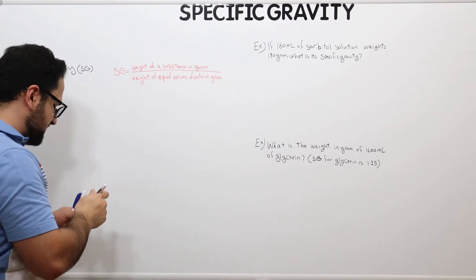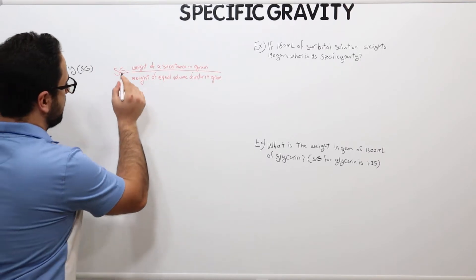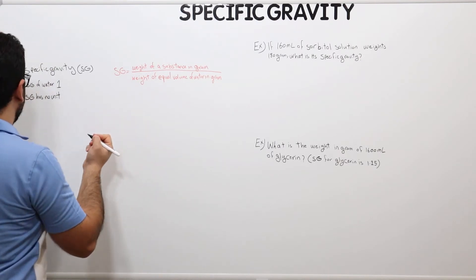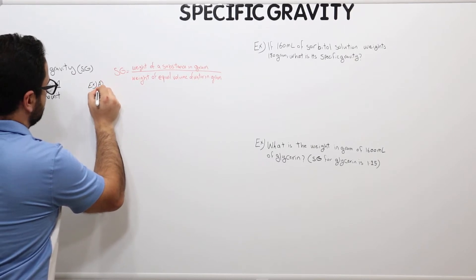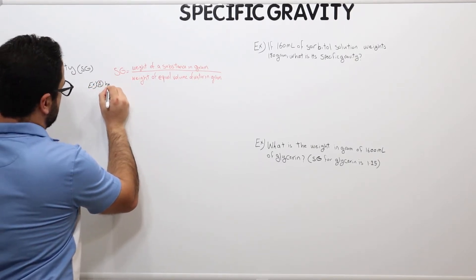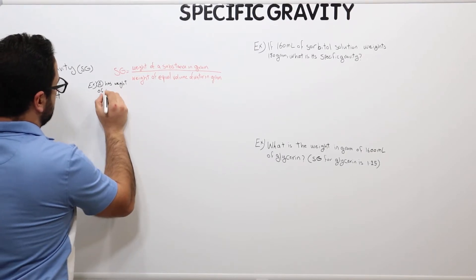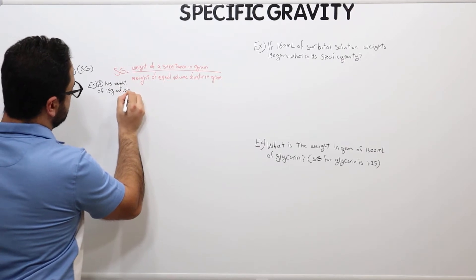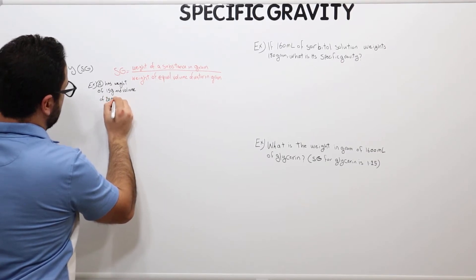So let's understand what the first part means — the weight of a substance in grams. Let's take an example: I have a substance A, and this substance has a weight of 15 grams.